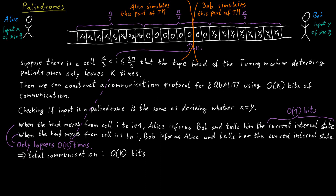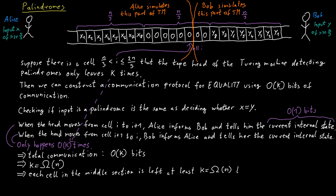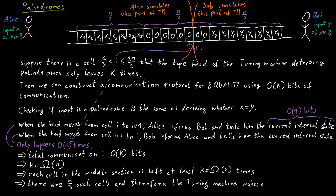However, we have also learned that equality requires at least Ω(n) bits of communication. Therefore, k must be at least Ω(n). This means that in the middle section of the tape, the Turing machine head leaves each of those cells at least Ω(n) times. There are n/3 such cells, so in total there must be at least Ω(n²) steps where the head moves in this middle section. This is a lower bound for the total number of steps the Turing machine must make, concluding the proof.